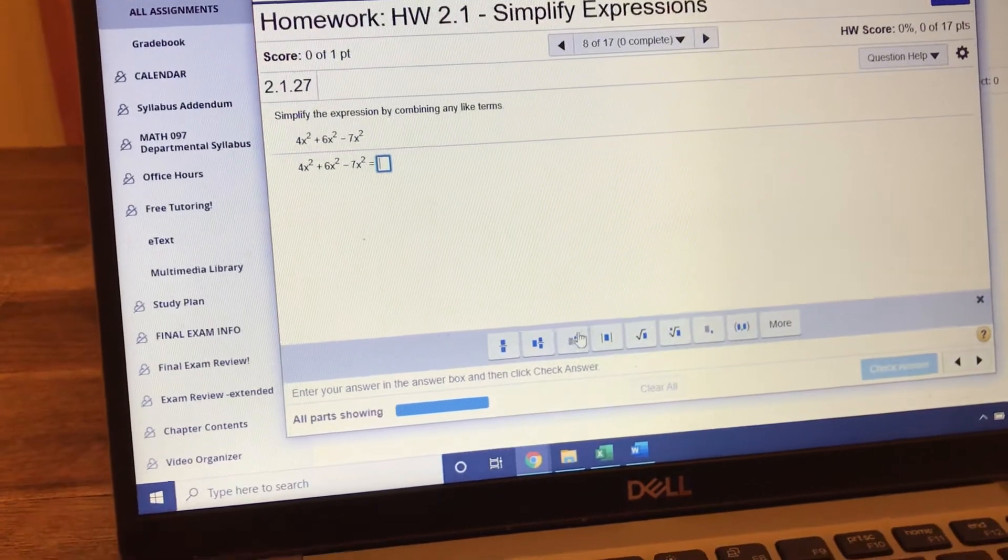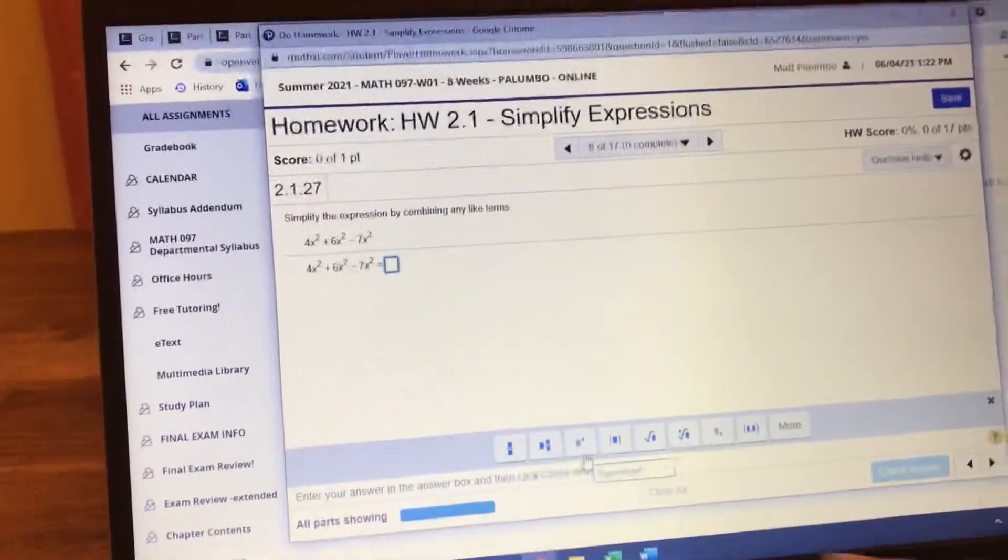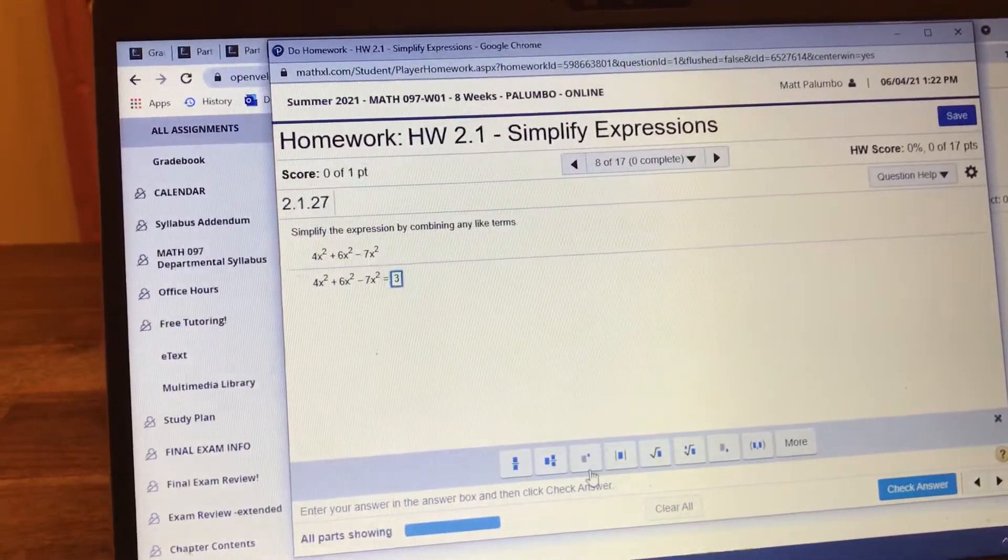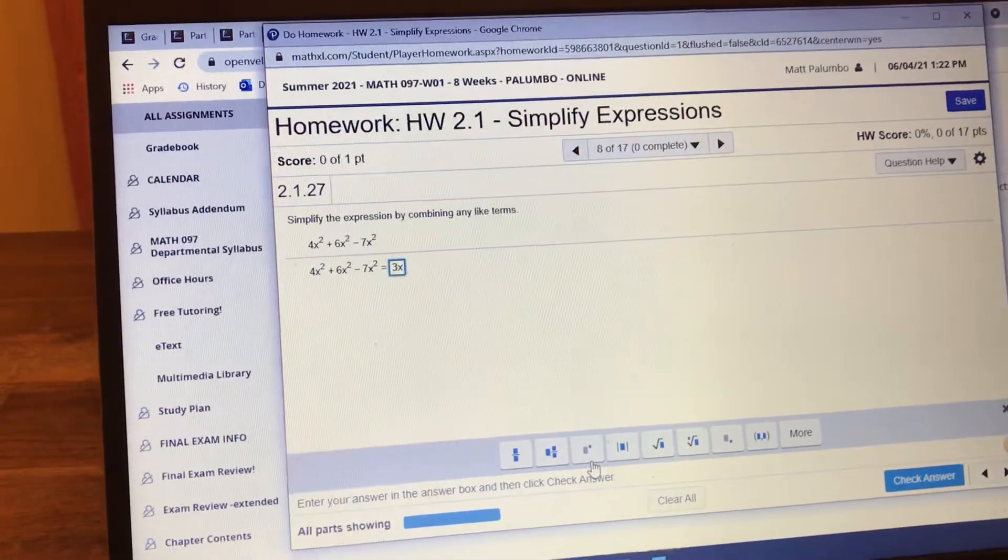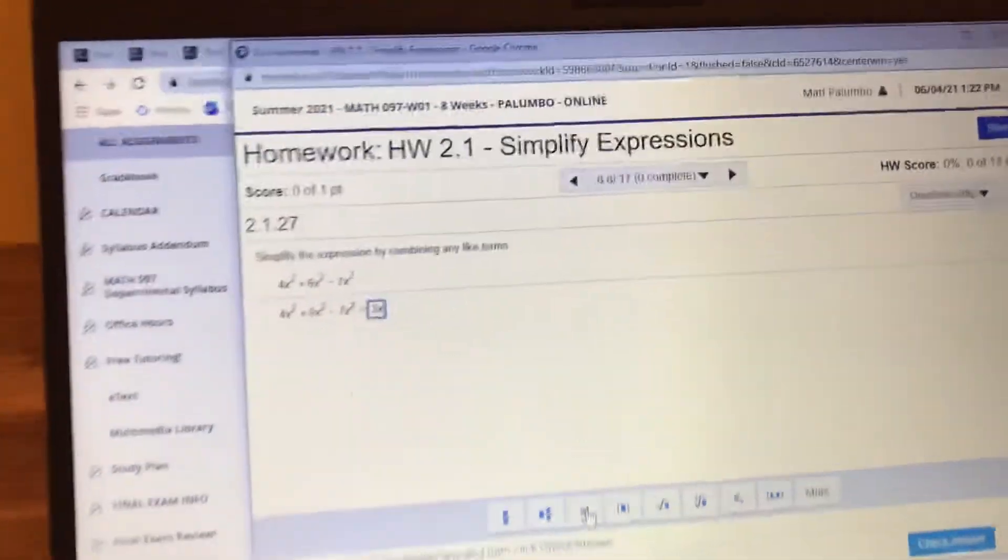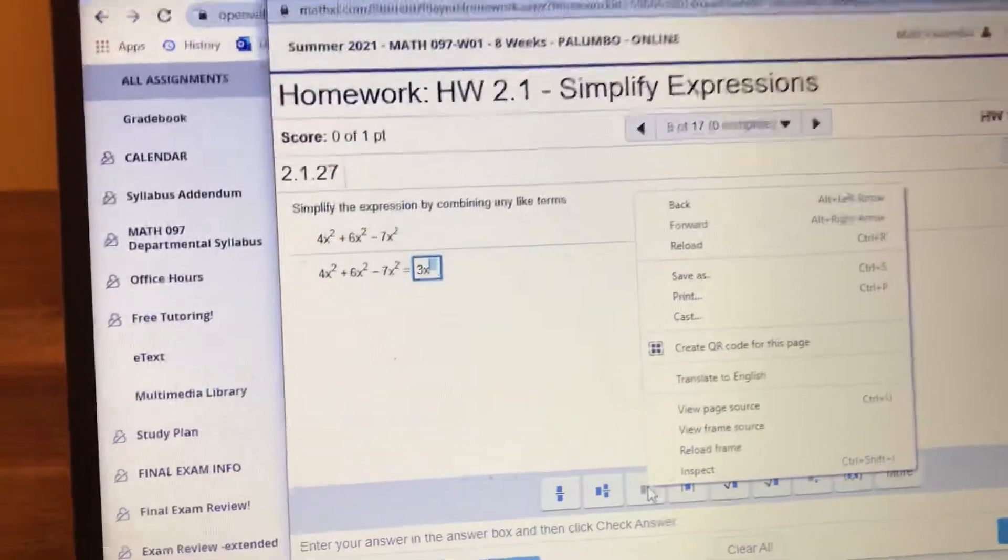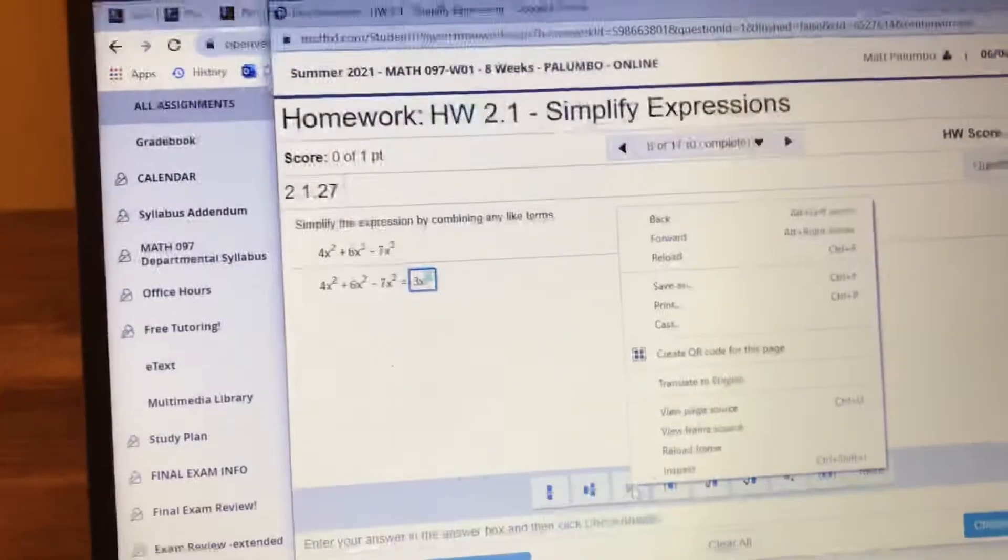This one right here is the exponent. So I'm going to type in 3, and then I'm going to hit X. And then when I hit this button right here, you're going to notice the exponent pops up.